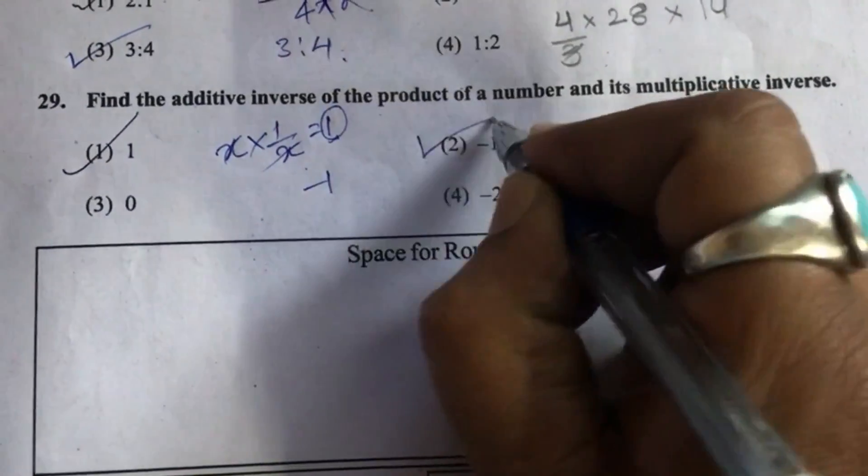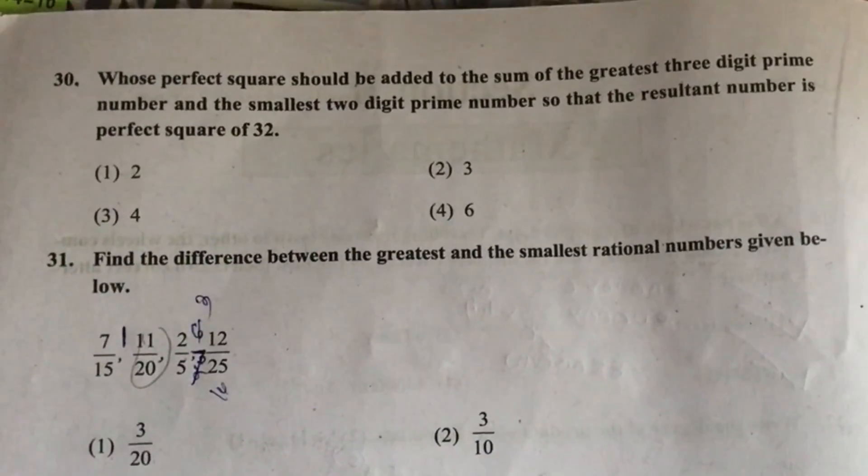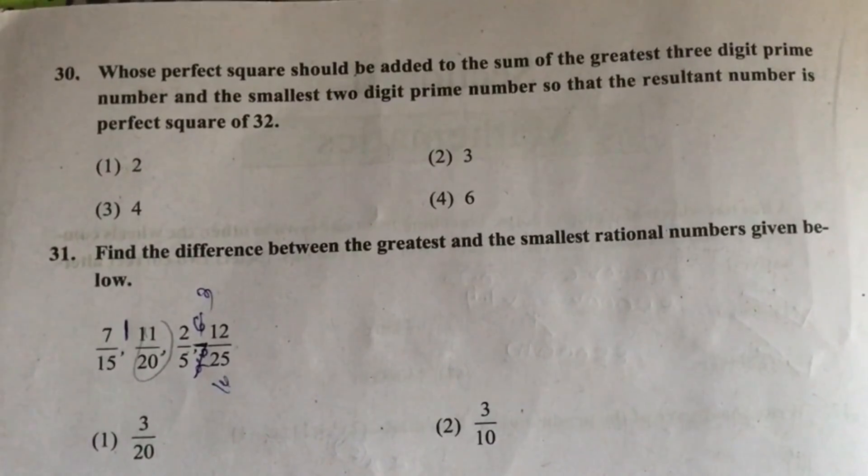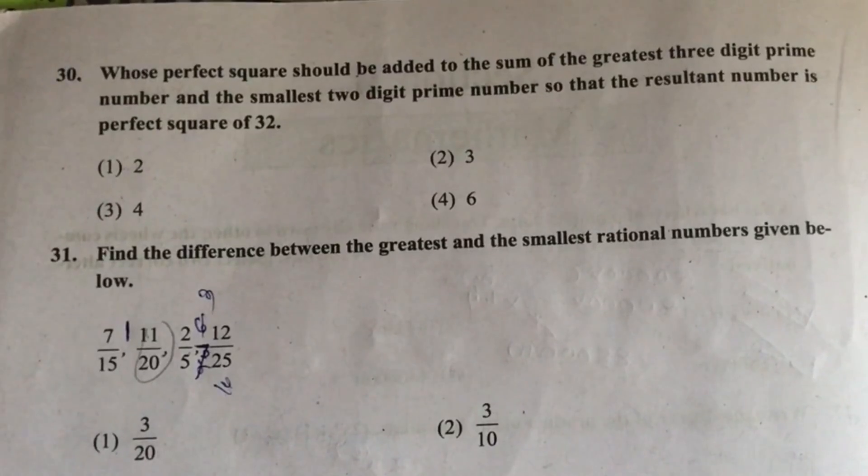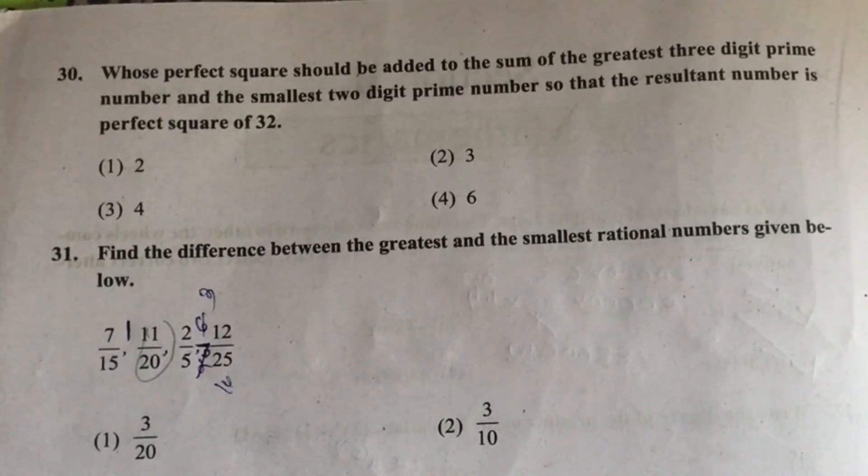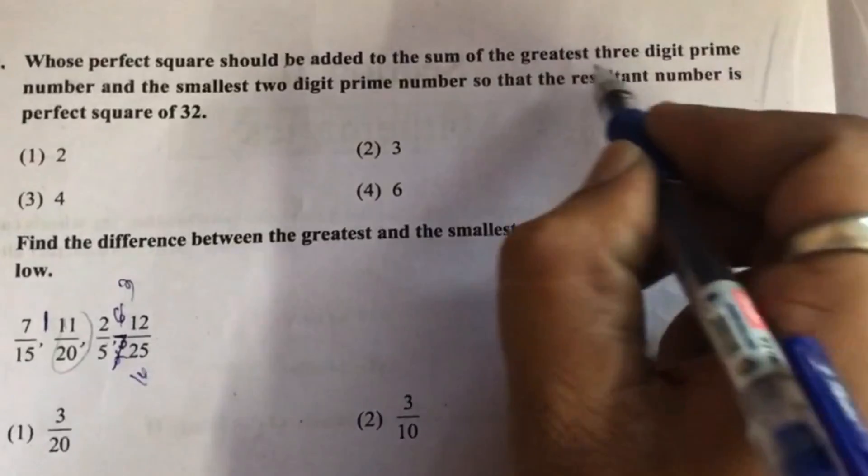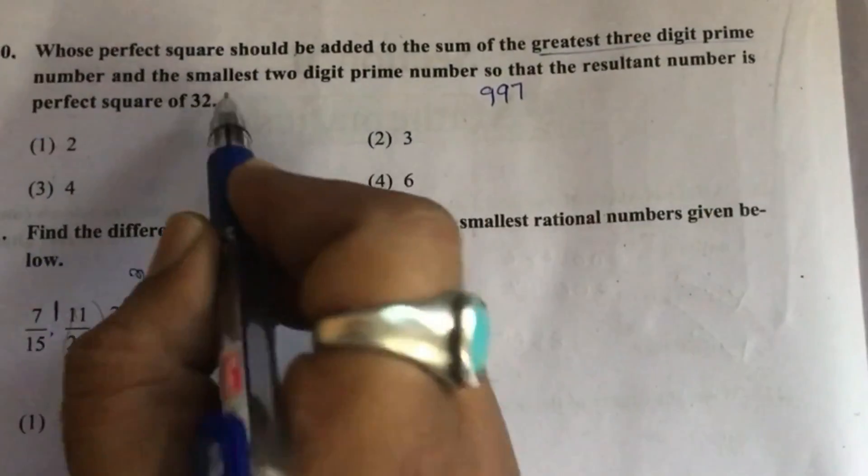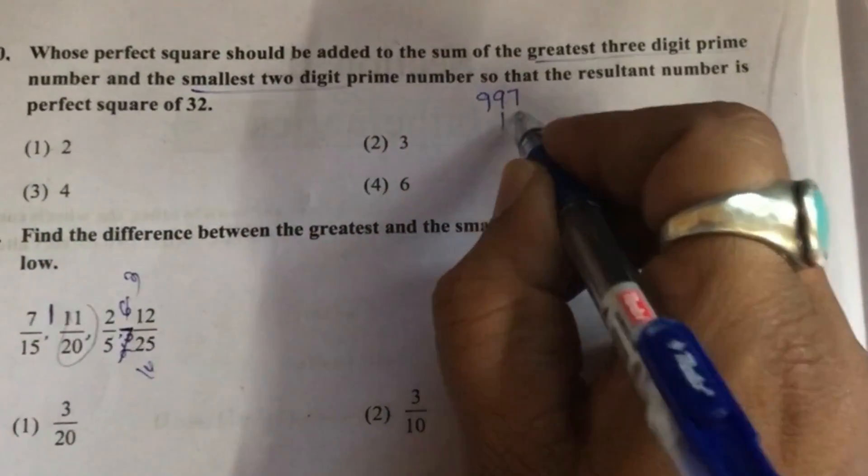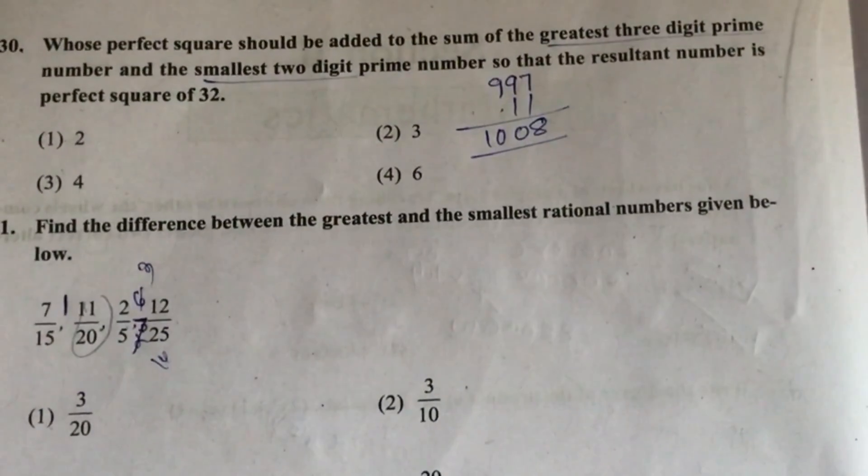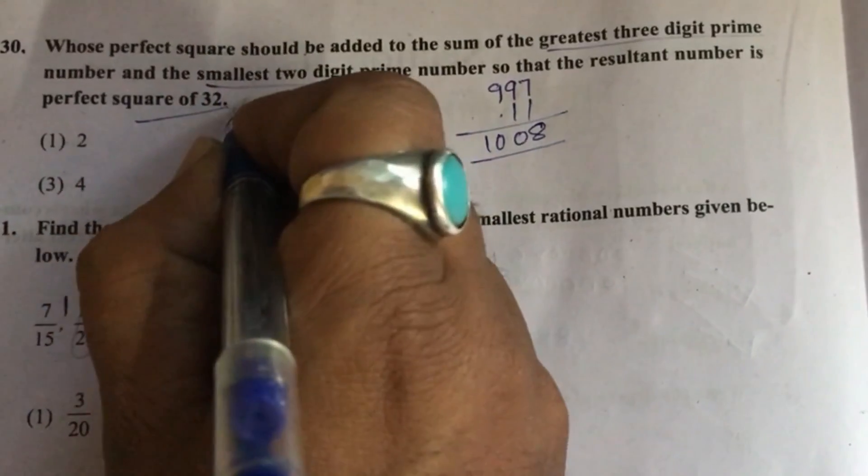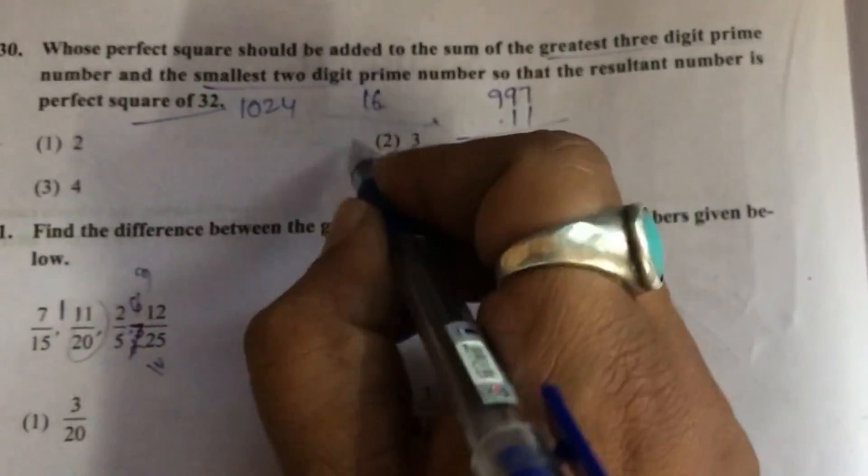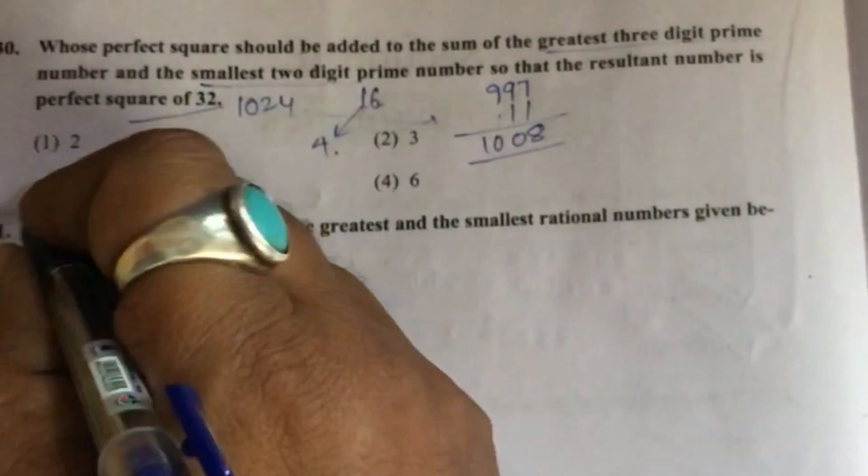Question 30: Whose perfect square should be added to the sum of the greatest three-digit prime number and the smallest two-digit prime number so that the resultant number is perfect square of 32? Greatest three-digit prime number is 997, smallest two-digit prime number is 11, sum is 1008. Square of 32 is 1024, so we have to add 16. 16 is square of 4, so option 3.